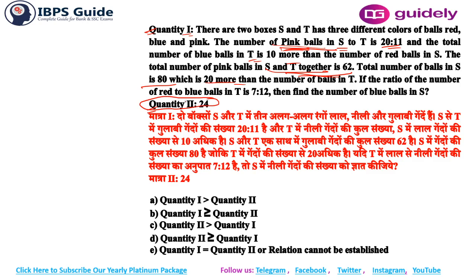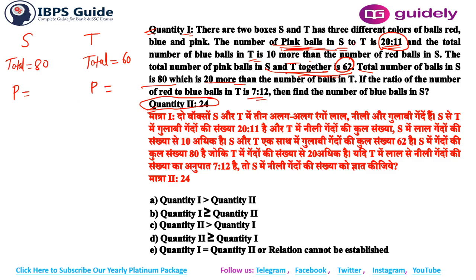If the ratio of red to blue balls is 7 to 12, let's find out. Let me write S and T here. Total balls in S is 80, and since it's 20 more than T, total in T is 60. Now for pink balls — the pink ratio is 20 to 11, which sums to 31, and 31 parts equals 62, so 1 part equals 2. Therefore 20 parts equals 40 (pink in S) and 11 parts equals 22 (pink in T).